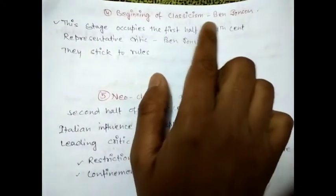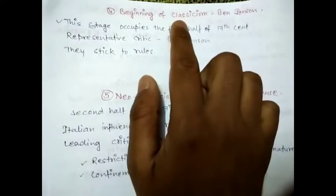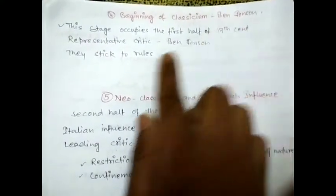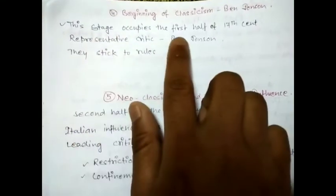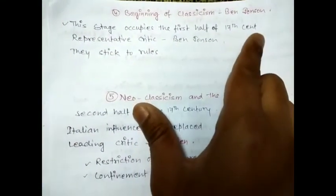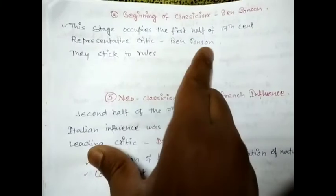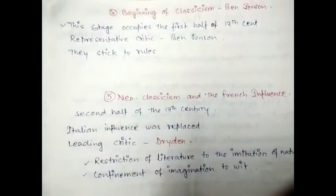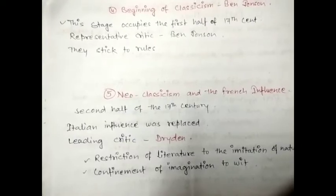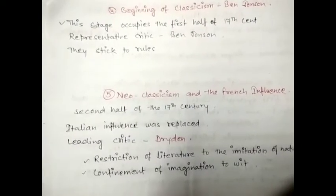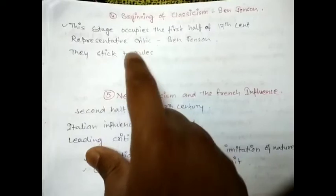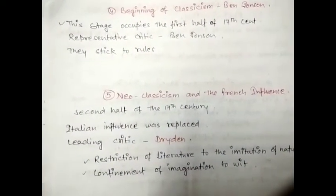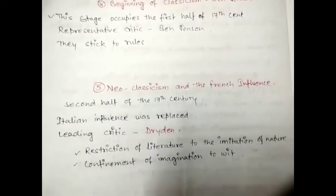The fourth phase was the beginning of Classicism. Ben Johnson was the representative critic of this stage, which occupies the first half of the 17th century. In Classicism, the critics wanted to stick to rules — they were governed by rules.